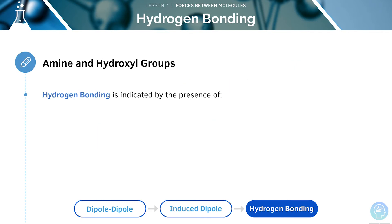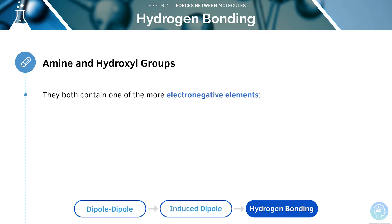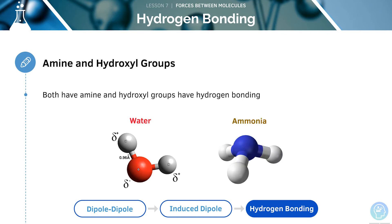Hydrogen bonding is indicated by the presence of amine groups or hydroxyl groups. Both amine groups and hydroxyl groups contain one of the more electronegative elements — nitrogen, oxygen, and fluorine — and they will also contain a hydrogen. Both the amino and hydroxyl groups will therefore exhibit hydrogen bonding.